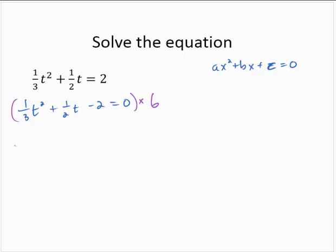Multiplying through by 6, 6 times 1 third is 2, so 2t squared. 6 times 1 half is 3, so 3t. And then 2 times 6 is 12. So 2t squared plus 3t minus 12 equals 0.